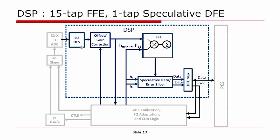The DSP takes ADC samples and deserializes them by a factor of two to reduce the operating frequency of the DSP blocks. The raw ADC samples are offset and gain corrected, then fed into an FFE block. The FFE block performs sum-of-product operations between the input data and the 15-tap FFE coefficients. The output of the FFE block is fed into a block which performs one-tap DFE equalization. One-tap speculative DFE equalization is the final step, resulting in the final binary decoded data.